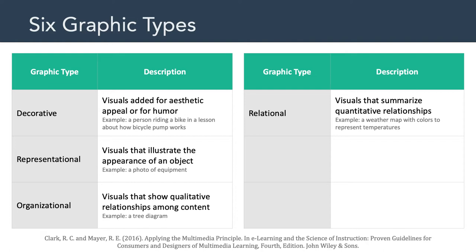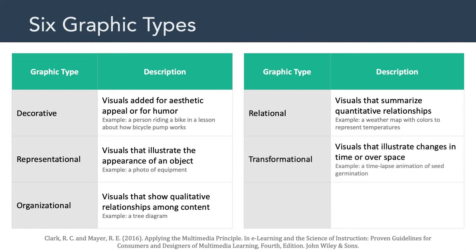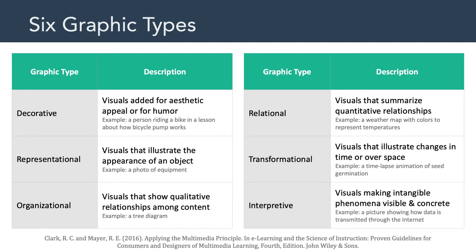The fourth graphic type is relational — visuals that summarize quantitative relationships. An example would be a weather map with colors representing different temperatures. The fifth graphic type is transformational — visuals that illustrate changes in time or over space, such as a time-lapse animation of a seed germinating. The sixth and final type is interpretive — visuals that make intangible phenomena visible and concrete, such as a picture showing how data is transmitted through the internet.